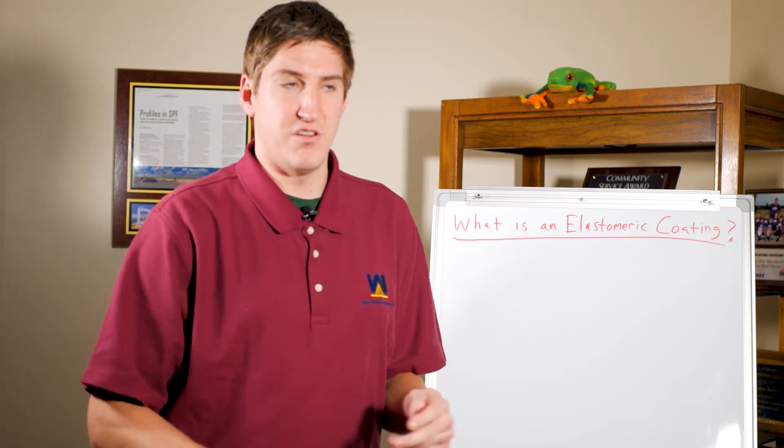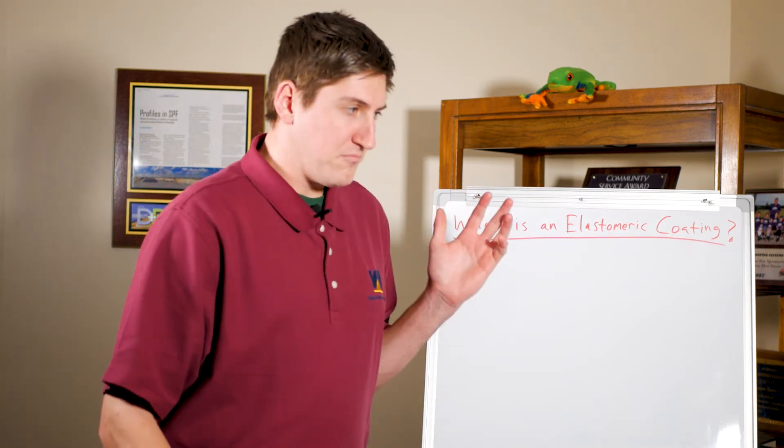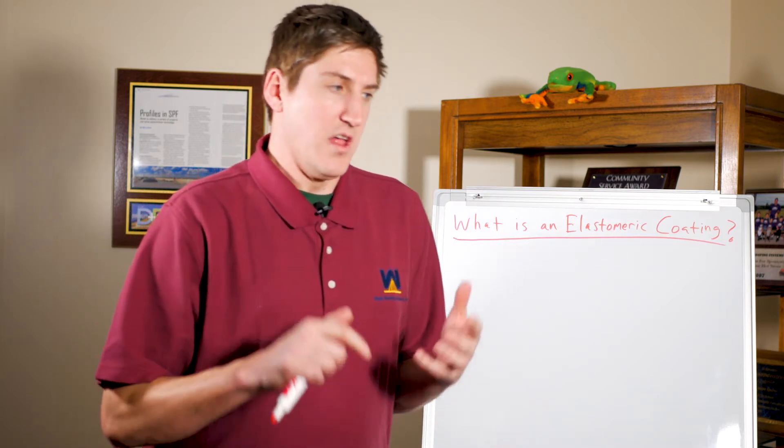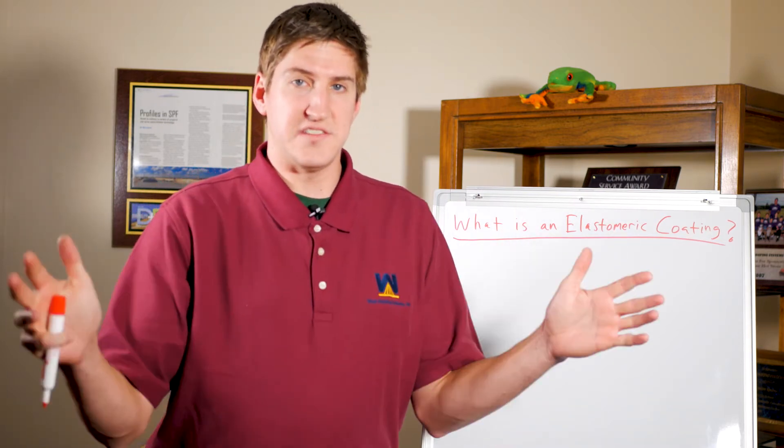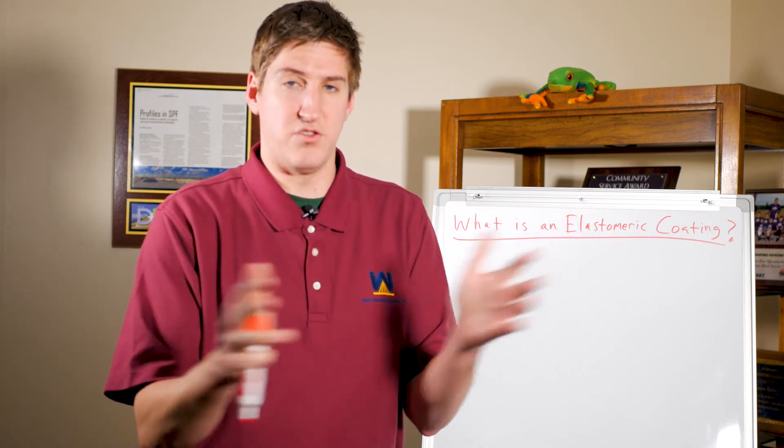It's actually silicone, acrylic, and urethane are the three components. But basically what makes a coating elastomeric is that the liquid can expand twice its size and come back to 100%, so back to normal.